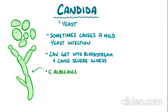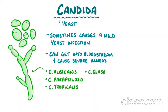These species include C. albicans, C. parapsilosis, C. tropicalis, C. glabrata, C. krusei, C. oris, and more. Of these, the most common one is C. albicans.